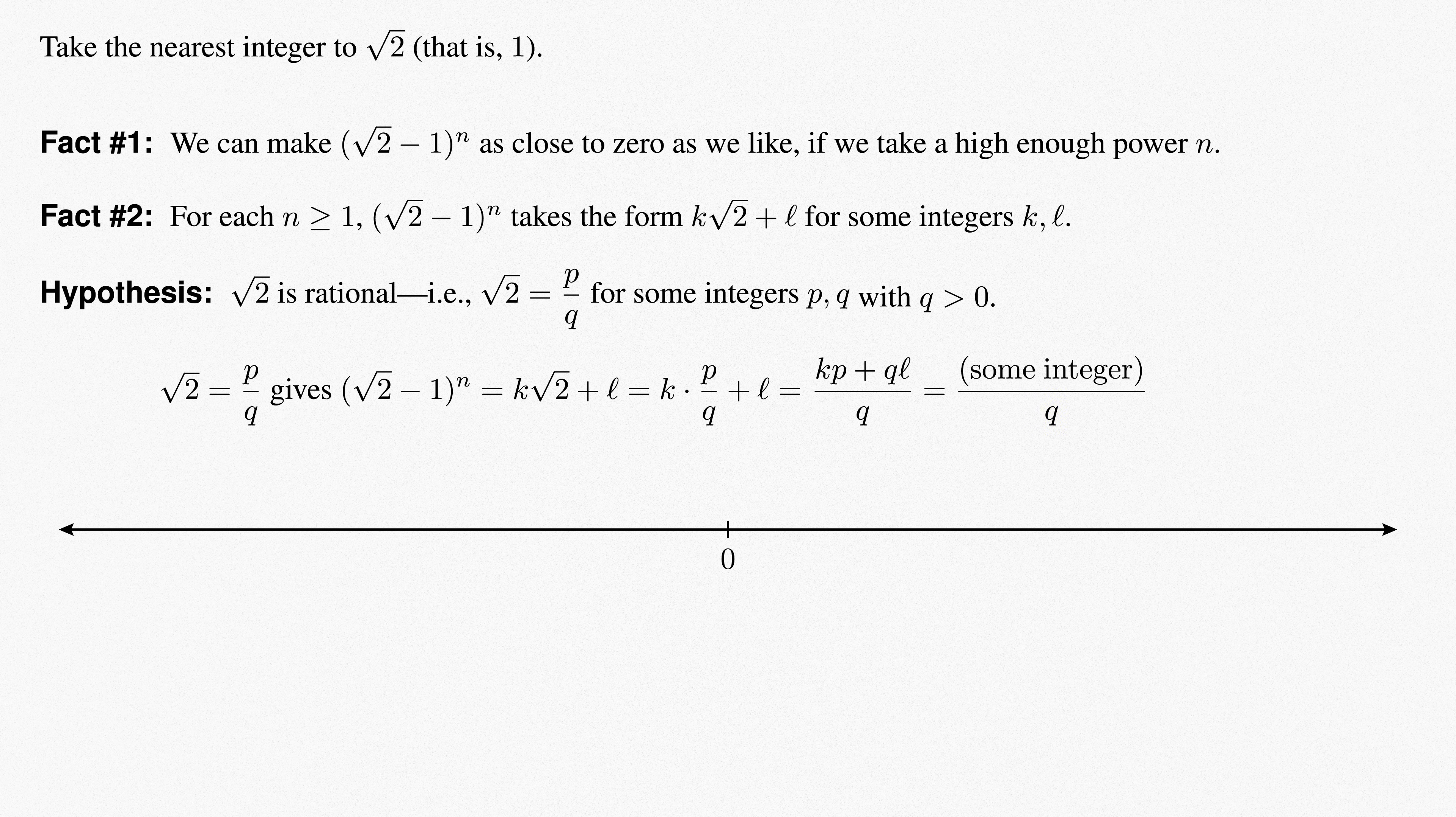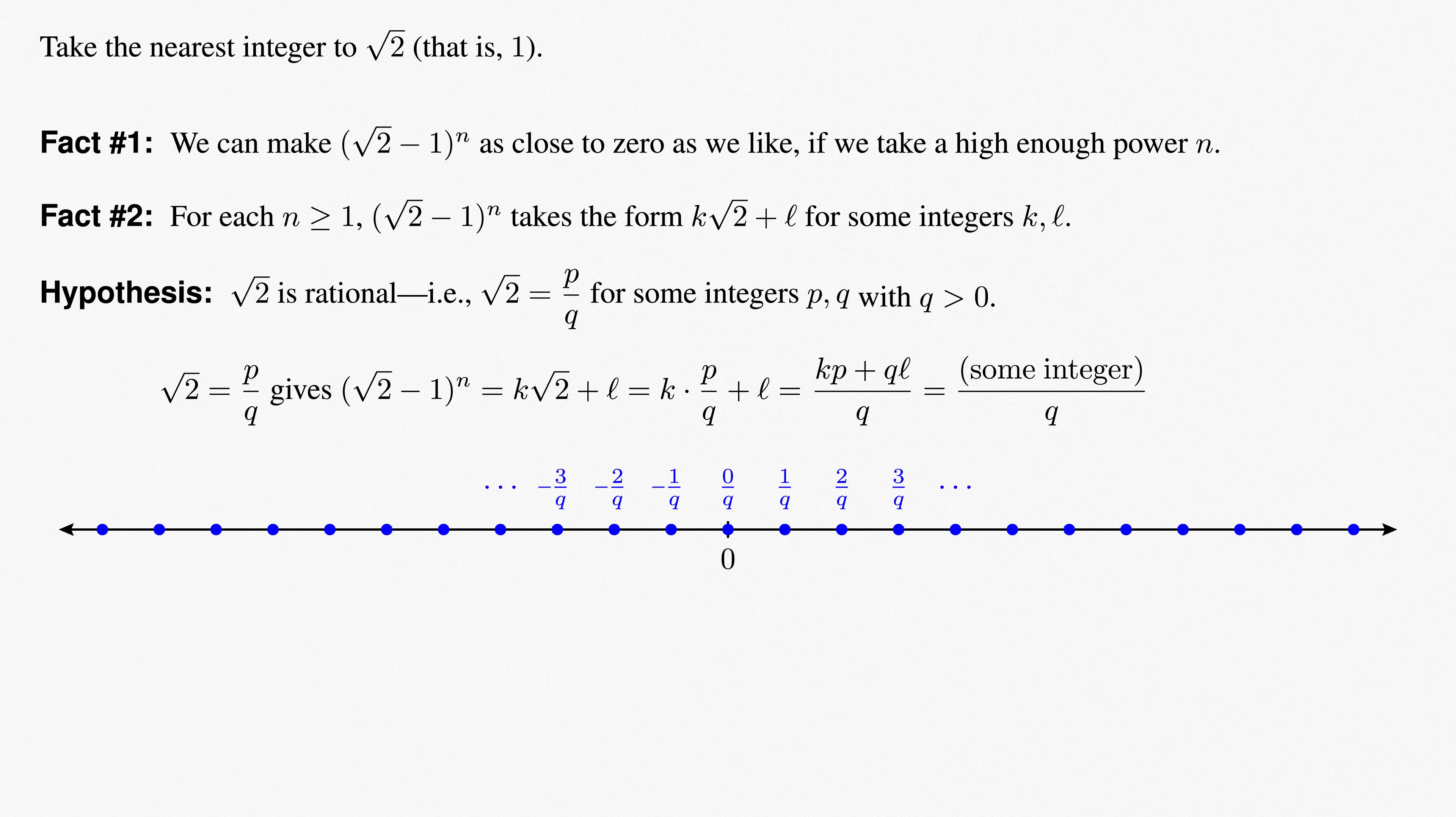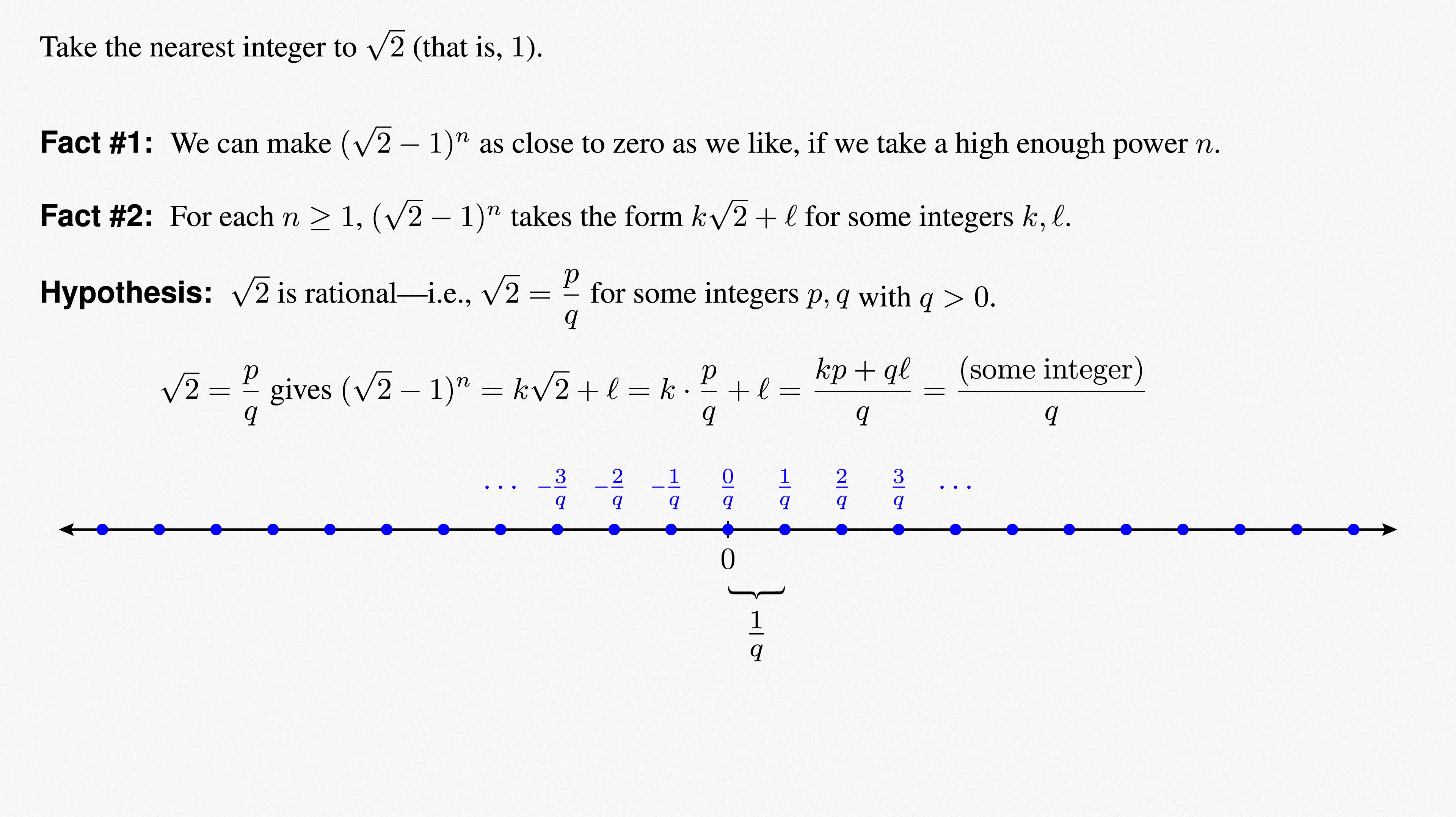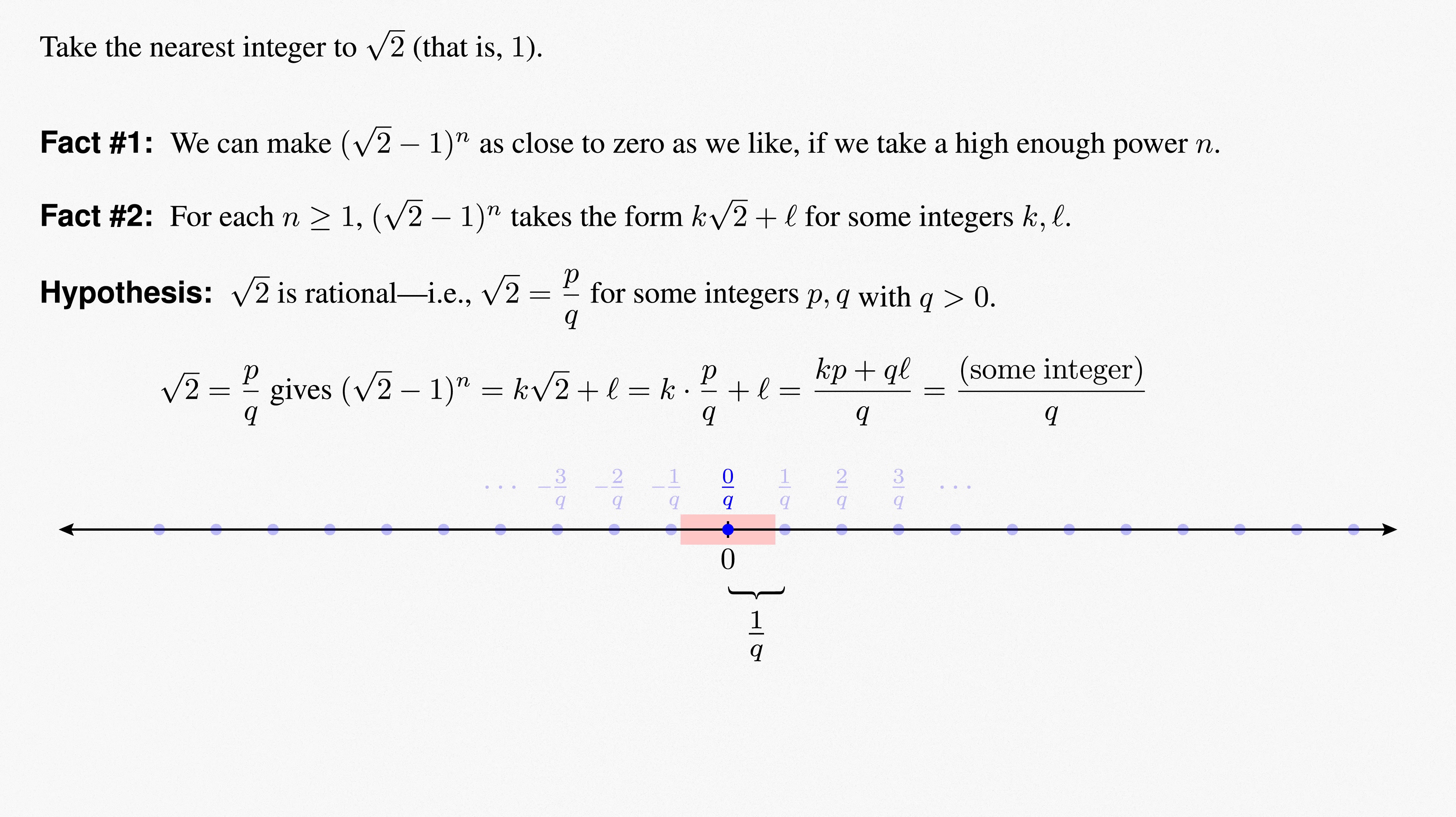Let's look at the real line and see where these fractions with denominators of q live. 0 over q, 1 over q, 2 over q, 3 over q, etc. And their negatives on the other side of 0. These values are equally spaced at a distance of 1 over q units apart, and each of our powers must be one of these numbers. So we have a sequence of powers, each one living in this set of equally spaced values on the real line, and those powers have to eventually get as close to 0 as we like. In particular, there's some power that's strictly less than this distance 1 over q from 0. And since there's only one valid point within that interval, that power must equal 0.